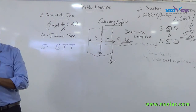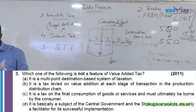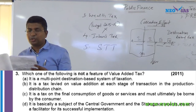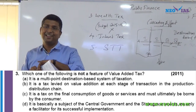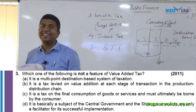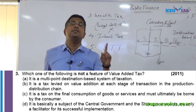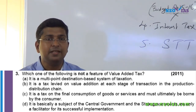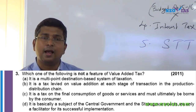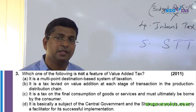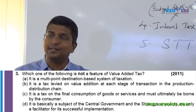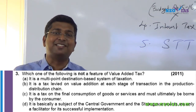Question number 3, a 2011 question — question number 4 is a dangerous question. It is an ABCD-type question with 'NOT'. Follow the rules: read all the statements. The answer means A, B, and C are features of VAT. NOT means there will be 3 correct statements and 1 wrong statement, and the wrong statement is your answer.